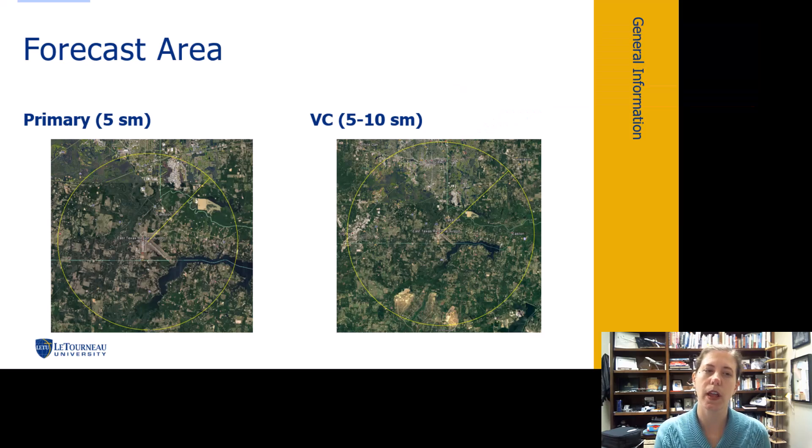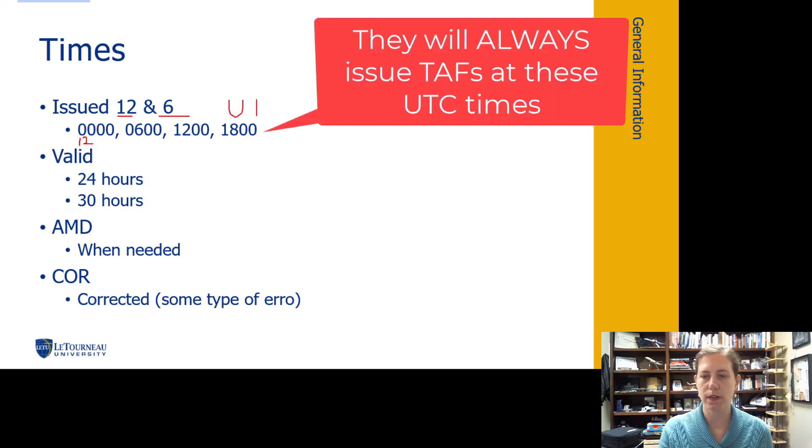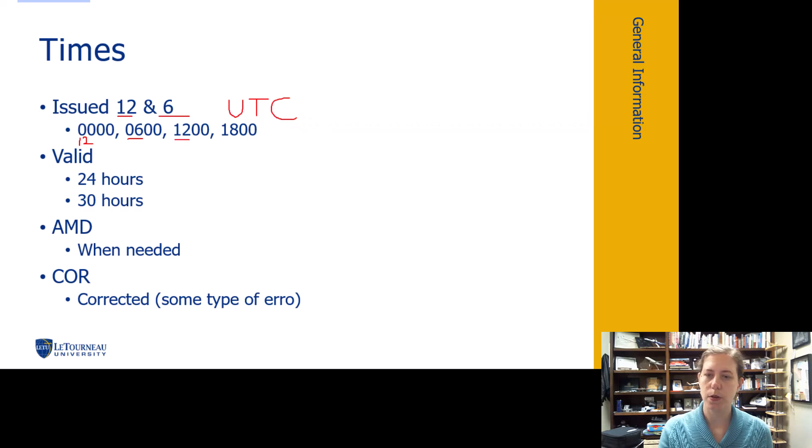That's the area that they're intending to forecast about. The times of the day that they issue this. An easy way to remember the times is just think about 12 and 6. So basically this 0000 UTC, these are in UTC. They are issued so at 12 midnight, at 6am, at 12 noon, and at 6pm. So we have two that are coming in to us at 6, and then we have another two that are coming in to us at 12, UTC.